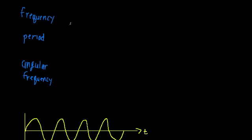Welcome back. Before we actually do some examples, I just wanted to clarify one important topic. With simple harmonic oscillation, we can describe how fast something oscillates by using three different things. In this video, we're going to look at the definitions of all three and see how all three ideas relate to each other.